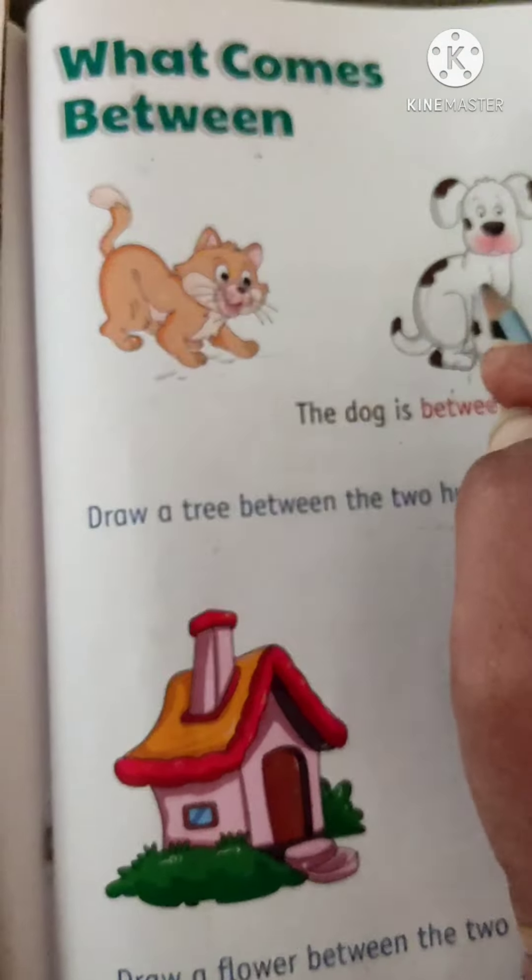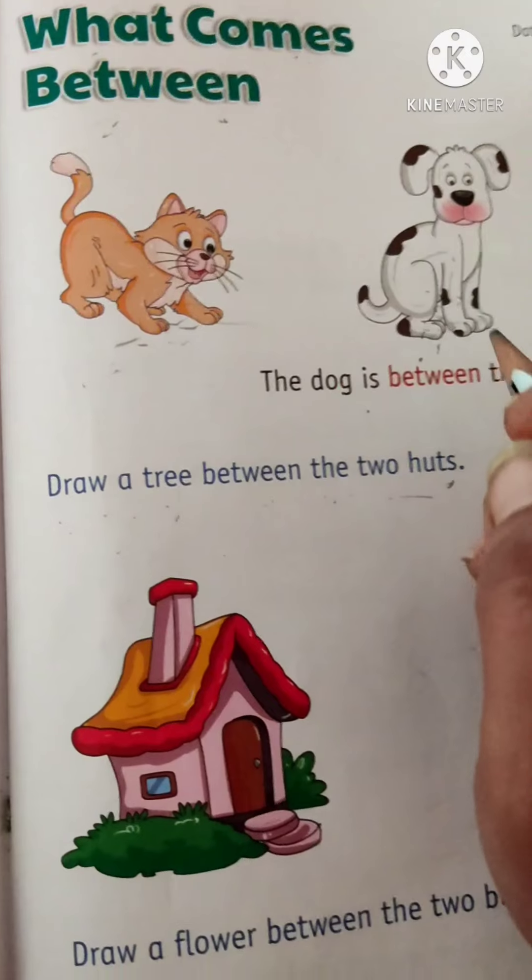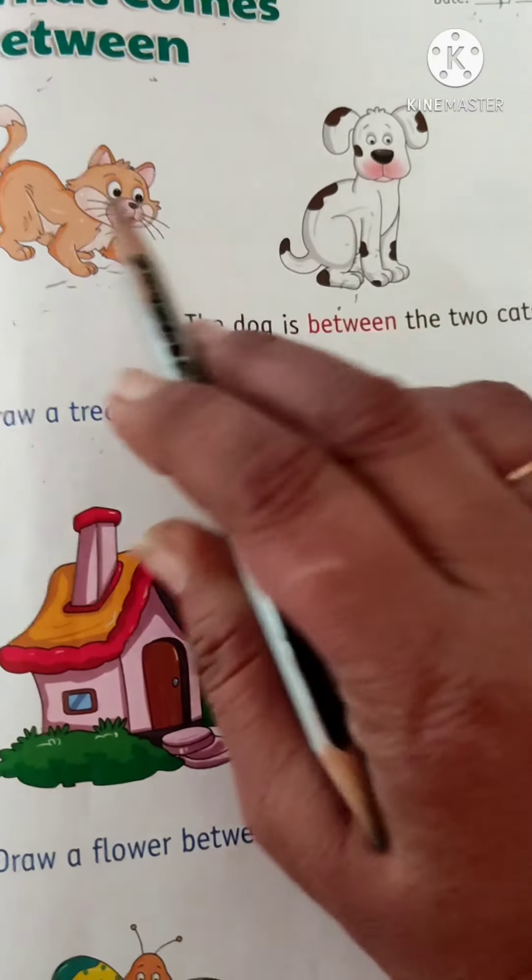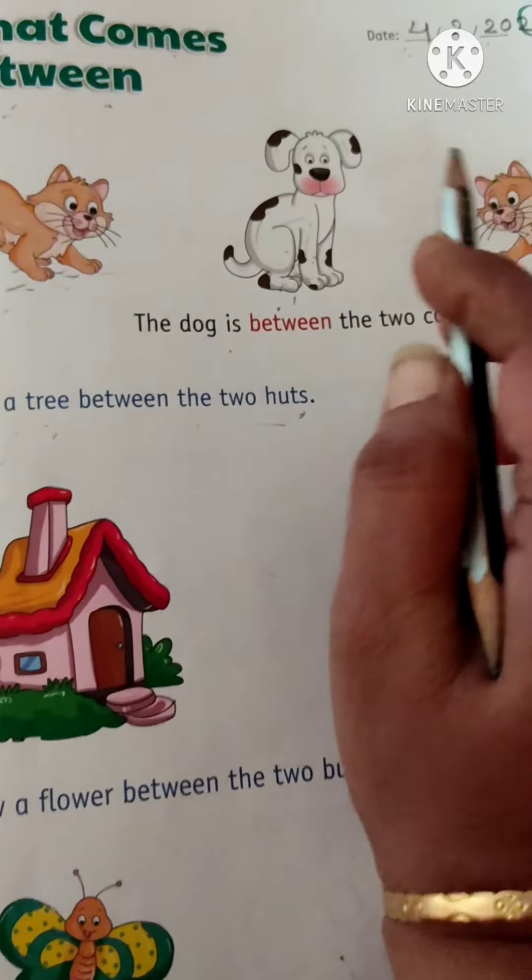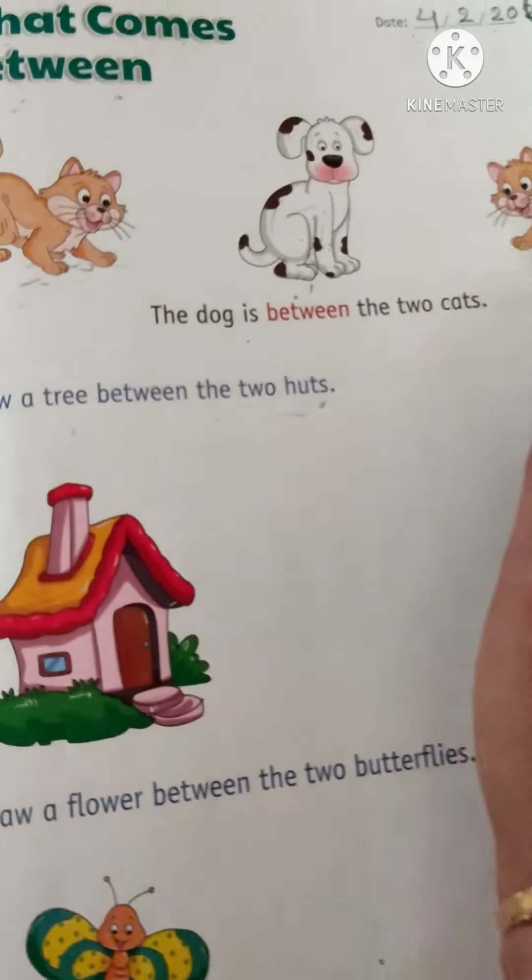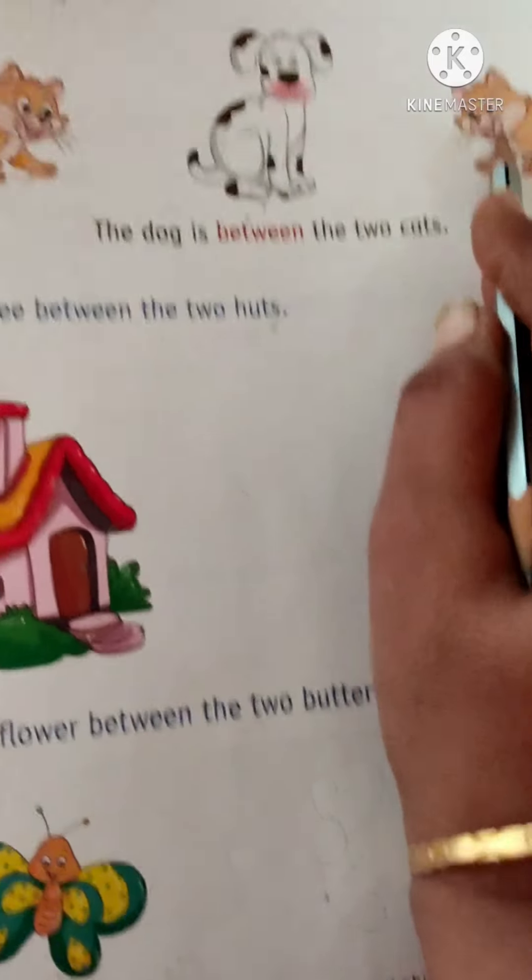Already we have learned between numbers. See, the dog is between the two kids. One and two. There is two kids, and the dog is between the two kids.